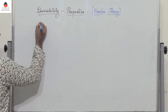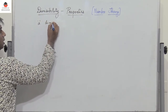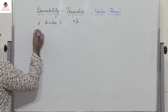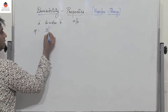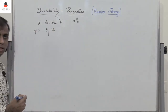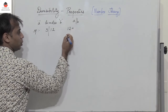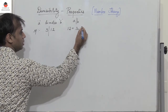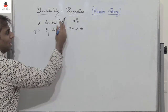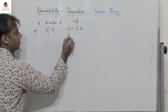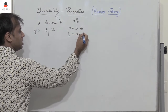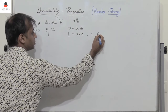We say that a number A divides another number B, or we write it as A divides B. For example, we can say that the number 3 divides 12, or 12 is divisible by 3. In that case, I can write the number 12 as 3 into another number 4. So the given number B can be written as A into another number C, where C happens to be an integer — C belongs to Z.